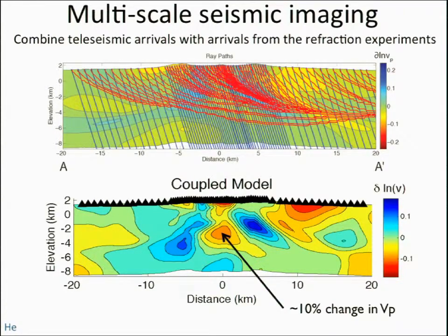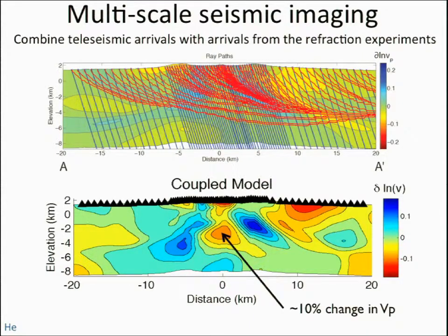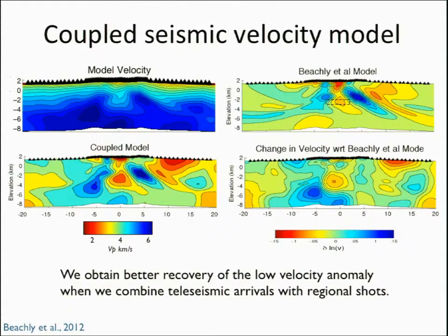One thing Ben has worked on that's really nice is combining the teleseismic arrivals with the refraction experiment. The teleseismic wavefront generates very nice crossing rays with the refraction experiments, giving better resolution. The velocity anomalies recovered in the coupled model show a 10% change in VP, and in absolute velocity you can see a big amplification of the low-velocity anomaly compared to the earlier tomographic model.